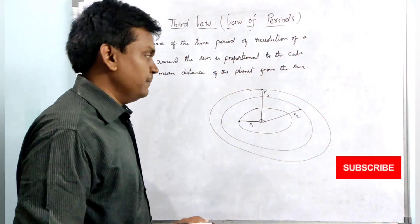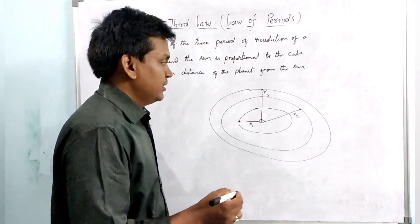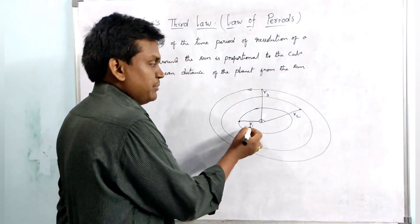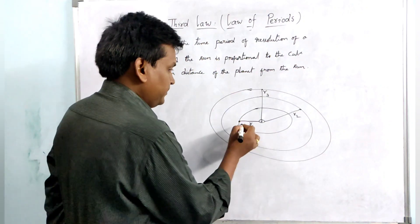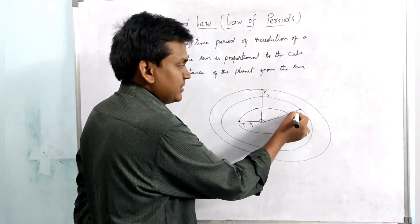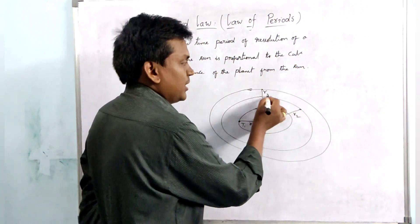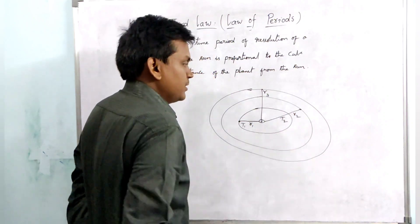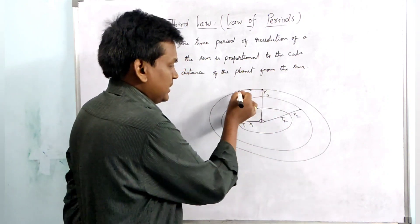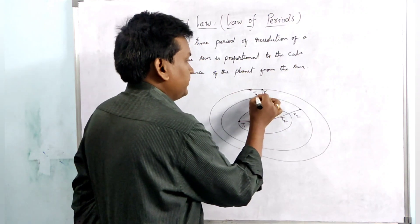If you observe clearly, the planet moving in the elliptical orbit at distance R1 will take less time to make one complete rotation around the sun. That means the time period T1 will be very less. The second planet at distance R2, which is longer than R1, will take more time to complete one round, so let it be T2. And the planet at distance R3 will have an even greater time period, which is T3.